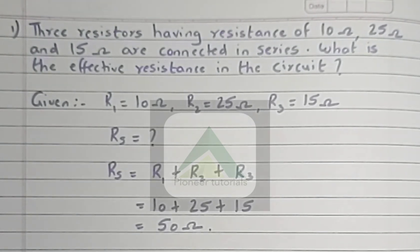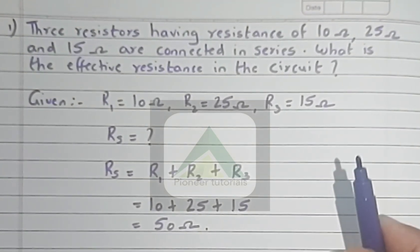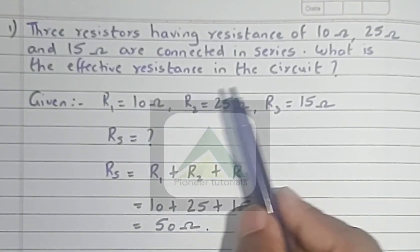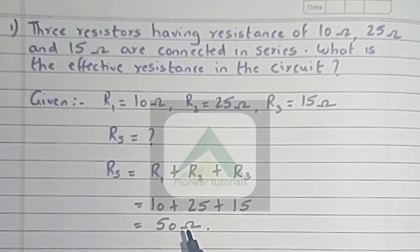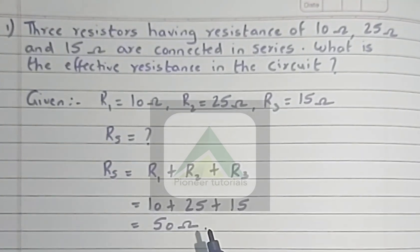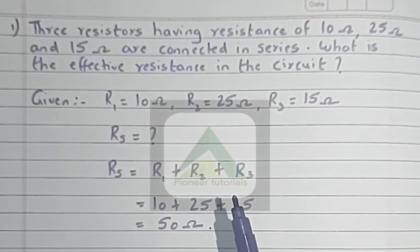This question is very small. Answer bhi hame hai jat se mil jata hai. So the answer will be: What is the effective resistance in the circuit? The effective resistance in the circuit is 50 ohm. Here we completed the question with the answer.